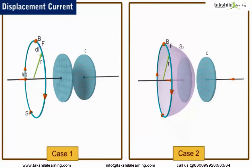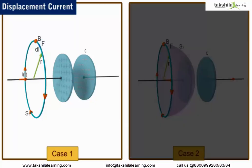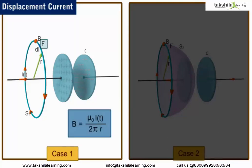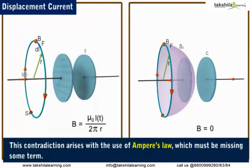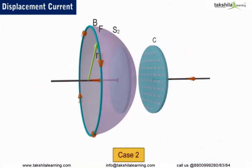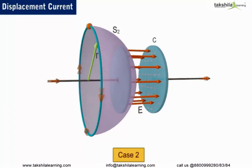Thus, Ampere's circuital law gives two different results at the same point F. In the first case, the magnetic induction at point F equals µ₀·i(T) / (2πr). In the second case, the magnetic induction is 0 at the same point — which is a contradiction. This contradiction arises because Ampere's law is missing some term. Maxwell suggested that on close observation of the surface S2 between the plates of the capacitor, we can write the missing term in terms of the electric field that passes through surface S2, which produces some current between the plates of the capacitor.